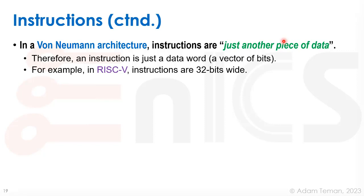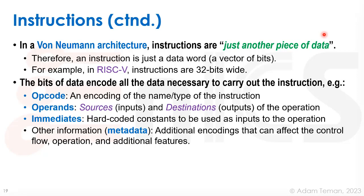In a von Neumann architecture, instructions are just another piece of data — an instruction is just a data word, a vector of bits. In RISC-V, instructions are always 32 bits wide. The bits encode all the necessary data to carry out the instruction. We have an opcode, which encodes the type of instruction; operands, which are the sources and destinations; and immediates, which are hard-coded constants used as inputs to the operation.